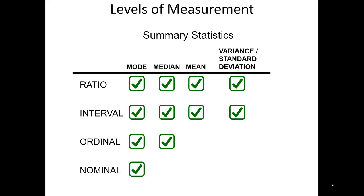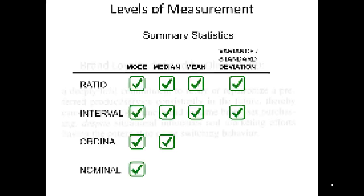Ordinal data, because we don't know how far apart those different values are from one another in ranking, we actually cannot correctly calculate the mean. Finally, only ratio and interval data can have a proper variance or standard deviation calculated. Why? To calculate a variance, you need to know what the mean is — because the definition of variance is how much your data tends to disperse away from the mean. Therefore, to calculate a variance and in turn a standard deviation, you must be able to calculate a mean.